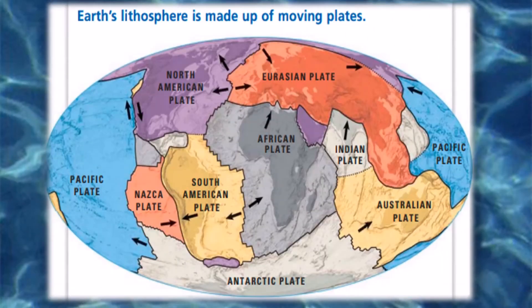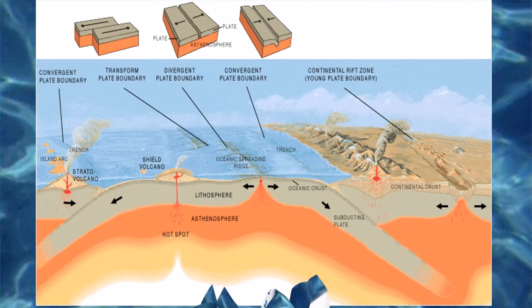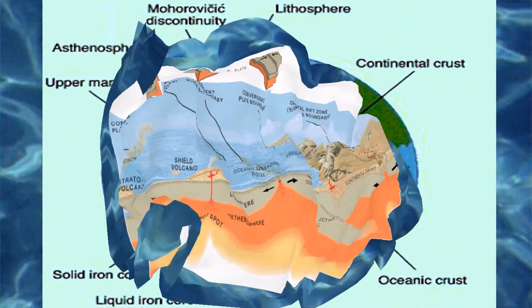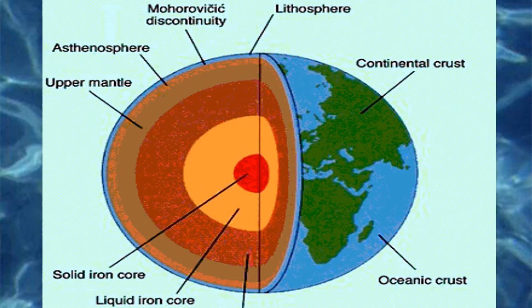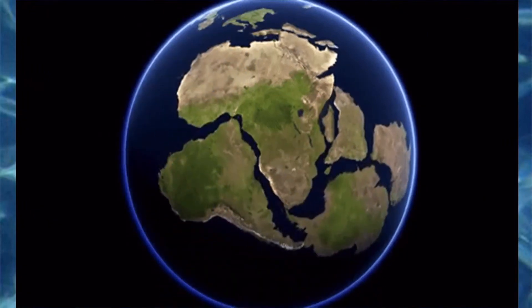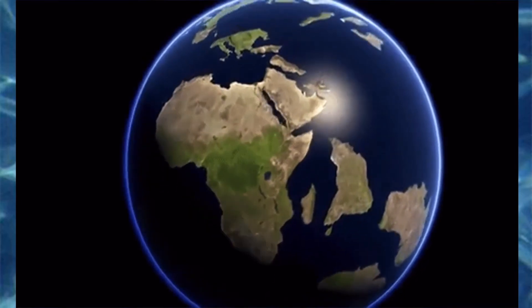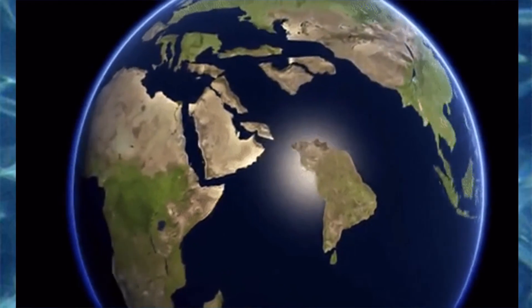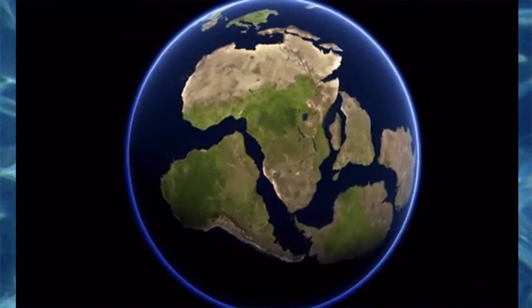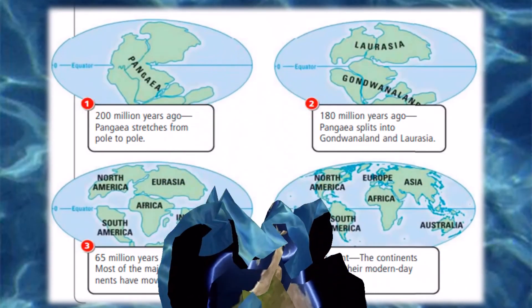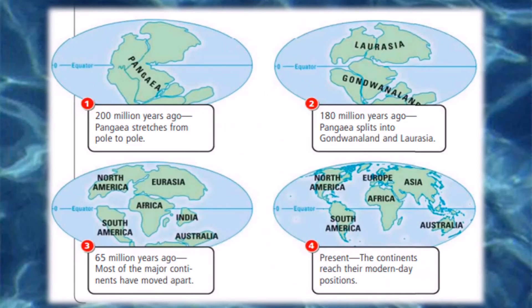The idea that Earth's surface might be moving is not new. As far back as the 1500s, when mapmakers started including North and South America in their world maps, they noticed that the western coast of Africa and the eastern coast of South America seemed to fit together like pieces in a puzzle. Were these continents joined at one time? In the late 1800s, German scientist Alfred Wegener began studying this question. In 1912, he proposed a hypothesis: Earth's continents were once joined in a single land mass and gradually moved, or drifted, apart. For many years, people did not accept Wegener's ideas.